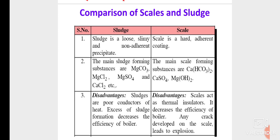Disadvantages of sludge: sludge is a poor conductor of heat. Excess sludge formation decreases the efficiency of the boiler. If the boiler water contains a high amount of sludge, the sludge absorbs heat so that steam formation is greatly reduced. A good boiler should not have any sludge-like substances in order to produce 100% efficiency and 100% steam formation. Sludge reduces the efficiency of the boiler.